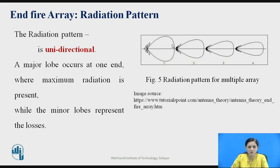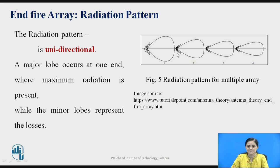Observing the lobe of this pattern, this is the major lobe, but it is a wider one and it becomes narrower in this direction by increasing the number of elements. Therefore, for the end fire array antenna the radiation pattern will be in only one direction — it is unidirectional. The major lobe occurs at one end where the maximum radiation is observed, while the minor lobes represent the losses.